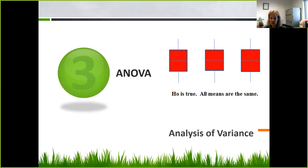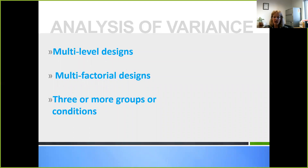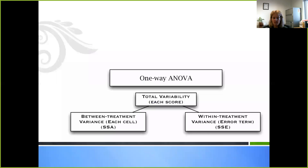If we have multiple comparisons to make, we want to use ANOVA. If we accept the null hypothesis, it means all the means are the same. ANOVA stands for analysis of variance. If you have a multi-level design, multi-factorial design, or three or more groups or conditions, you want to consider analysis of variance. One-way ANOVA looks at the total variability in each score, helping you examine the between-treatment variance in each cell and the within-treatment variance, or the error term.